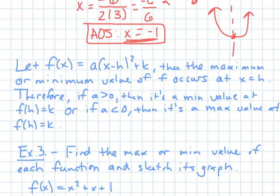Or if a is less than 0, then it's a max at that value, and same thing. You plug in h, you get k. So that's just saying that if you have it, a is greater than 0, it's facing up, so it becomes a minimum. If it's the other way, a is less than 0, and so the vertex is a maximum at that point.